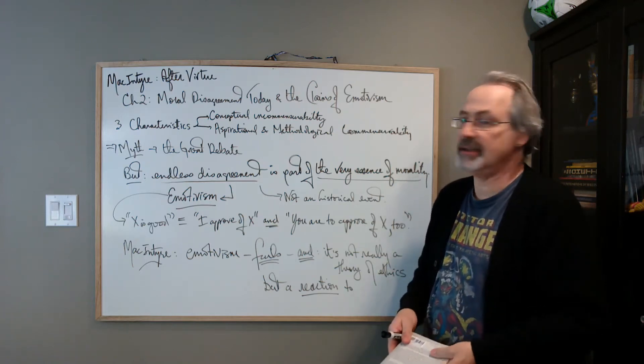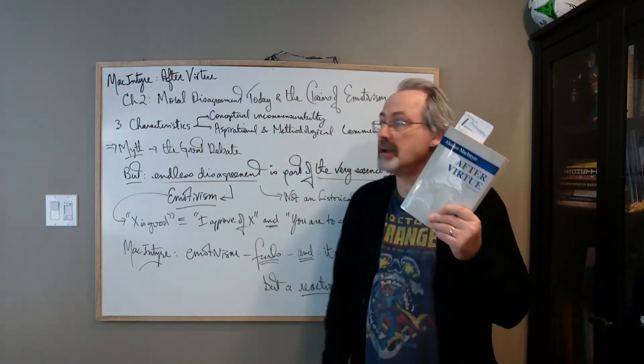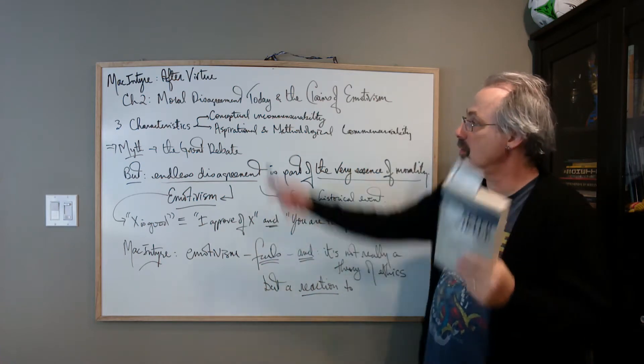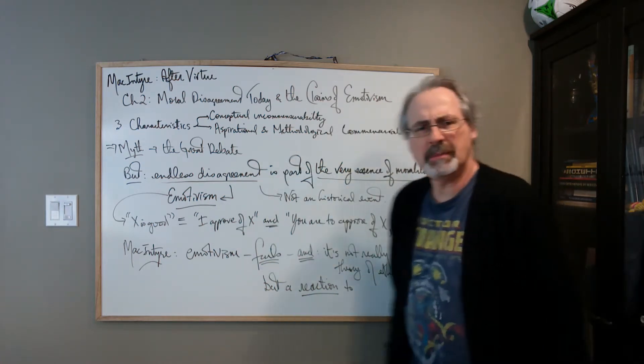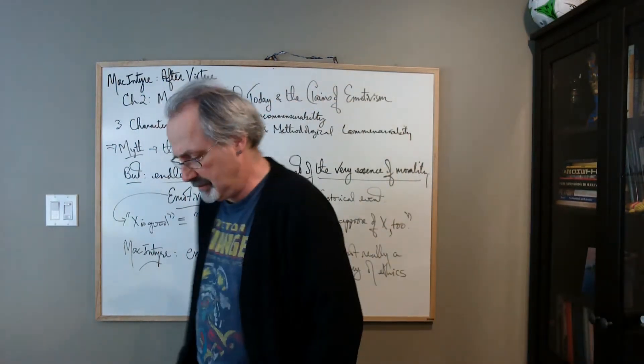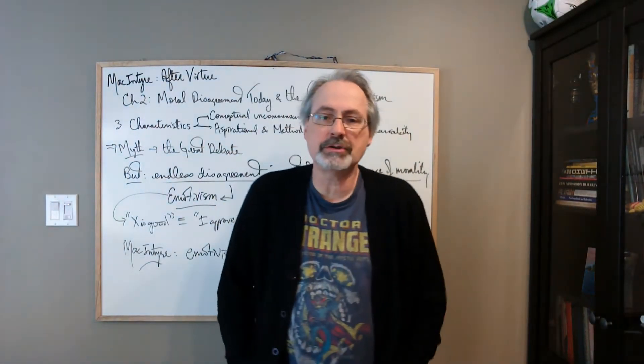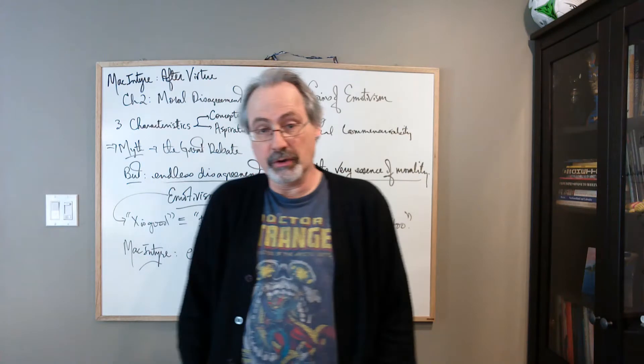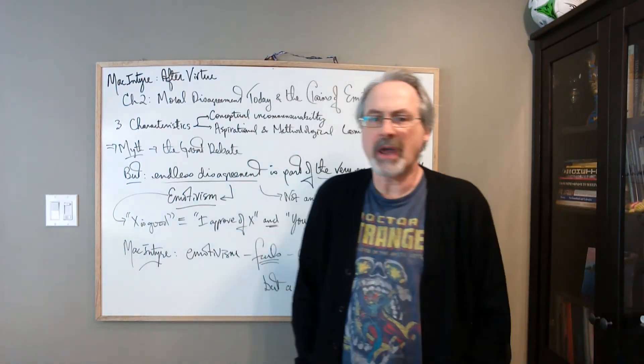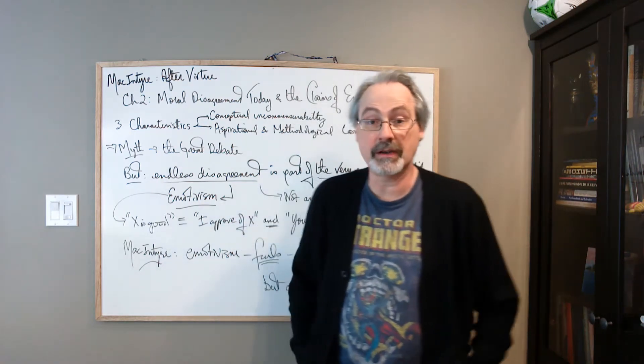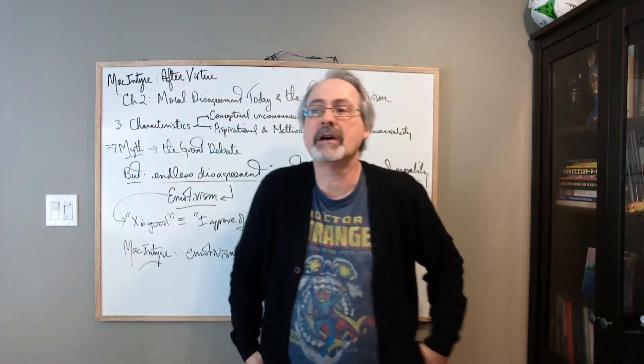At the end of the last video dealing with MacIntyre's Chapter 2, Moral Disagreement Today and the Claims of Emotivism, I talked about how there's been this decontextualization of these moral terms. You have this notion of terms being used outside of their original context, outside of how they were originally embedded in society.